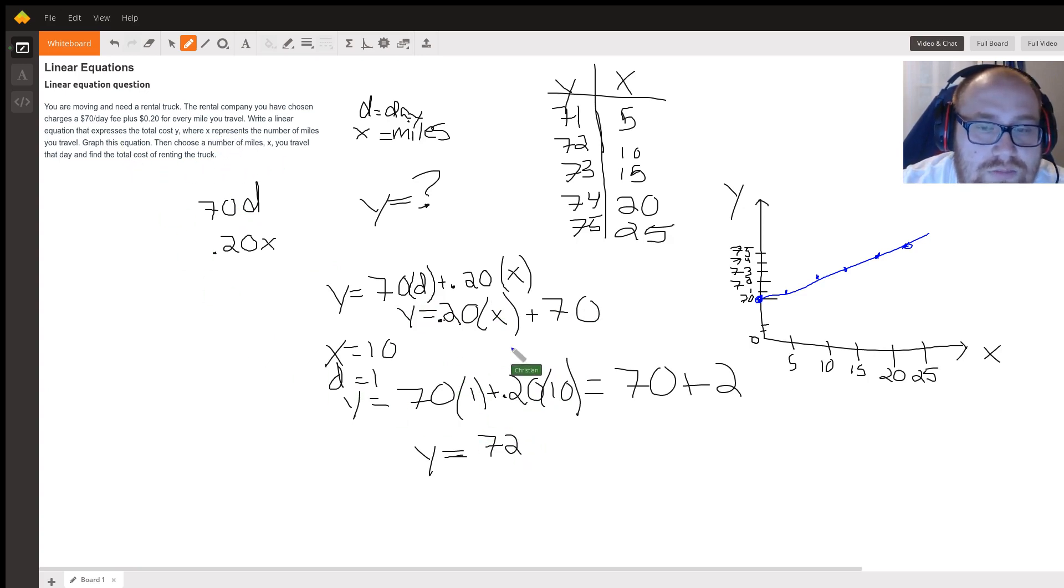Now graph this equation. In order to graph it I made a stem and leaf, so for every five miles you get one dollar of travel expenses. I made it easy. I did it in increments of five, so you have 5, 10, 15, 20, 25 for the number of miles, and then y. Once you plug in 5, 10, 15, 20, 25 into x, you get 71 because 0.20 times 5 is 1, then you get 72, 10 times 0.2 is 2, so on and so forth.